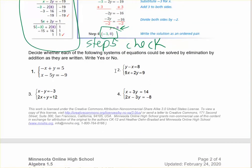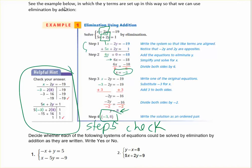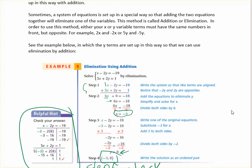On the worksheet, your first four problems — you don't have to solve these. You just have to say whether or not you could solve them by elimination using addition as they are written. You're either going to say yes, you could add these together and one variable would eliminate, or no, you could not. Remember, in order to use elimination by addition, both variables have to have the same number in front — like 2y and 2y — and one has to be a plus and one has to be a minus.